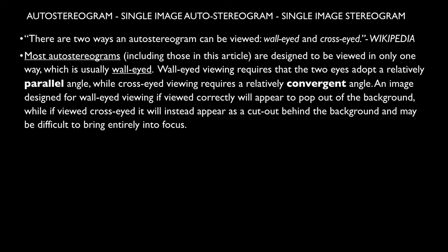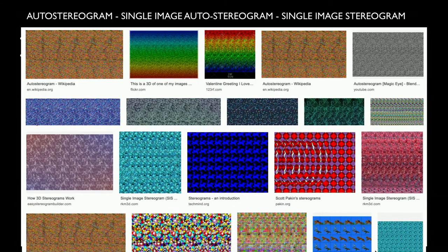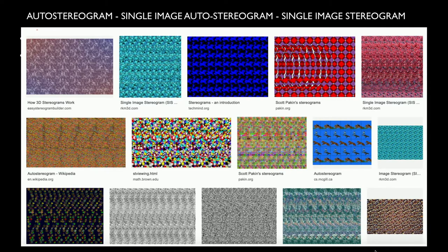Wall-eyed viewing requires that the two eyes adopt a relatively parallel angle, while cross-eyed viewing requires a relatively convergent angle. An image designed for wall-eyed viewing, if viewed correctly, will appear to pop out of the background, while the cross-eyed version will instead appear to be behind the background, and it may be difficult to bring entirely into focus. This plays on how pseudo and ortho, or cross-eyed and parallel, can really be interchanged with each other, and it kind of confuses issues altogether. When you look up autostereogram, you really only ever get something like a magic eye — a single image autostereogram.